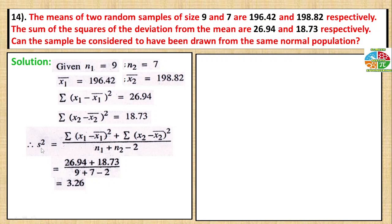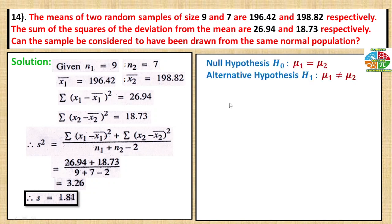Calculating the standard deviation, substituting the values 26.94 plus 18.73 divided by 9 plus 7 minus 2 equals 3.26. So s equals 1.81.